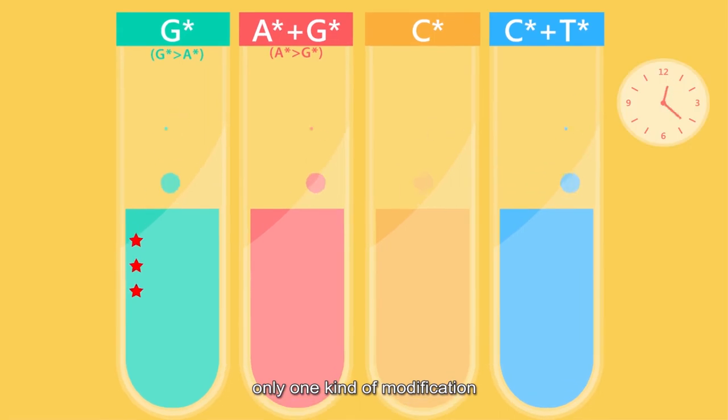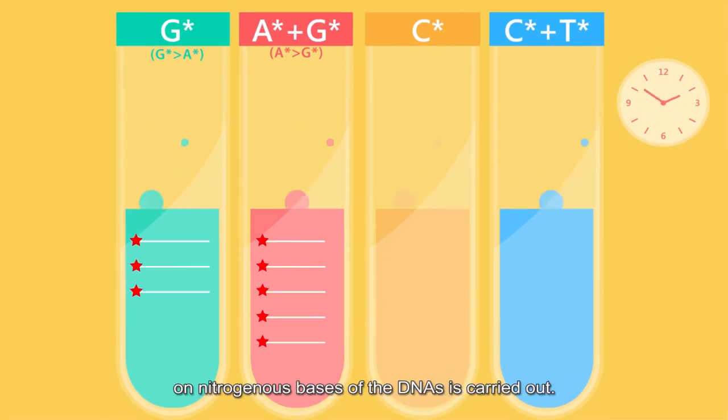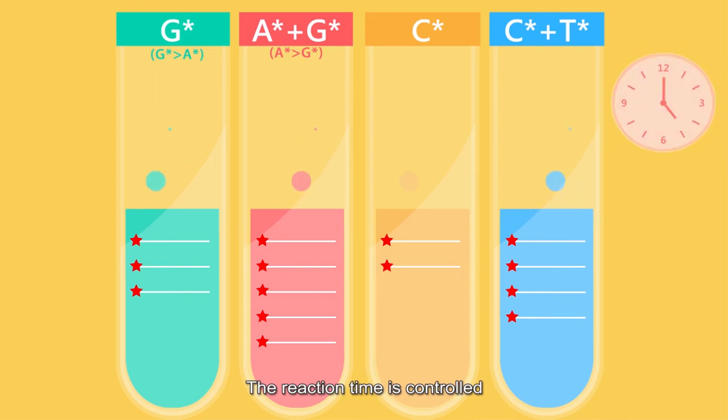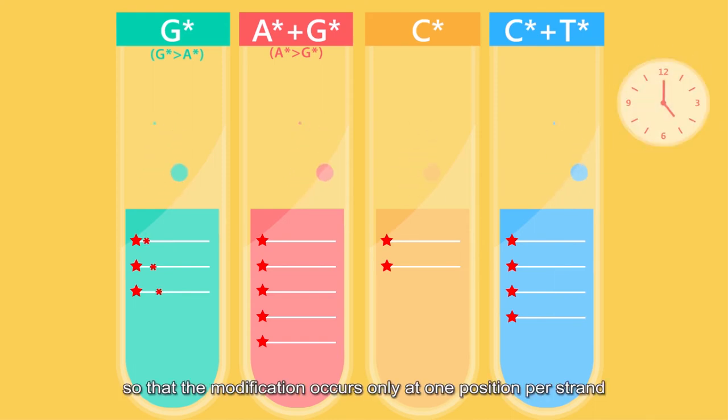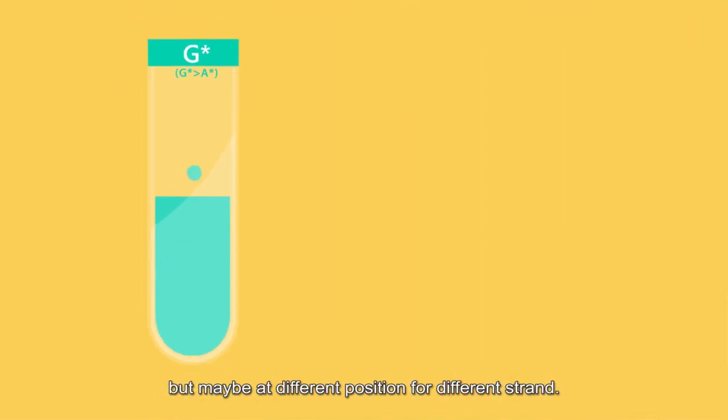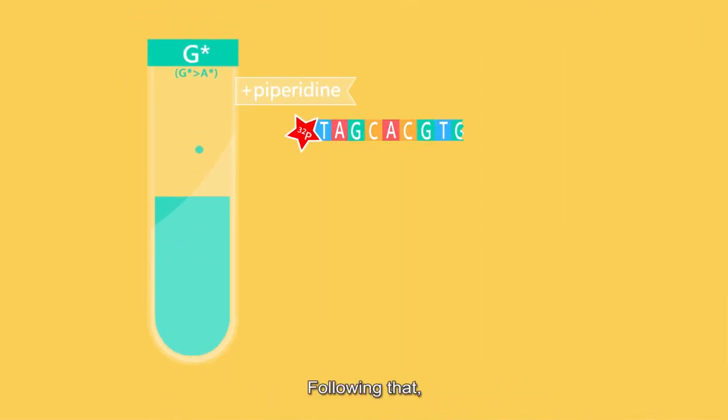For each aliquot, only one kind of modification on nitrogenous bases of the DNAs is carried out. The reaction time is controlled so that the modification occurs only at one position per strand but may be at different positions for different strands.